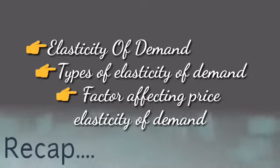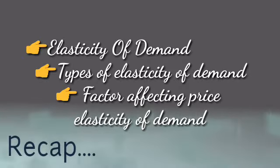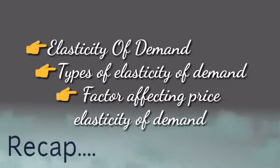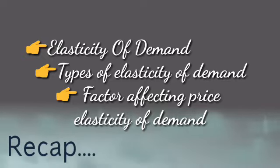Elasticity of demand is a percentage change in quantity demanded to the percentage change in any factor affecting demand of a commodity. We discussed about three types of elasticity of demand: price elasticity, income elasticity, and cross elasticity. Then we talked about the factors affecting price elasticity of demand: availability of close substitutes, income of consumer, luxuries versus necessities, proportion of total expenditure spent on the product, number of uses of the commodity, and time period.